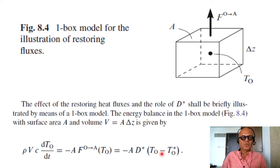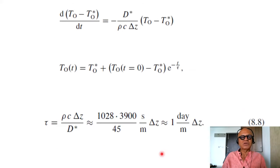Of course, we are merging the various Taylor series expansion to produce that form. So dT/dt of T_O minus T_O star, the perturbation, equals minus D star over rho C delta Z times T_O minus T_O star.